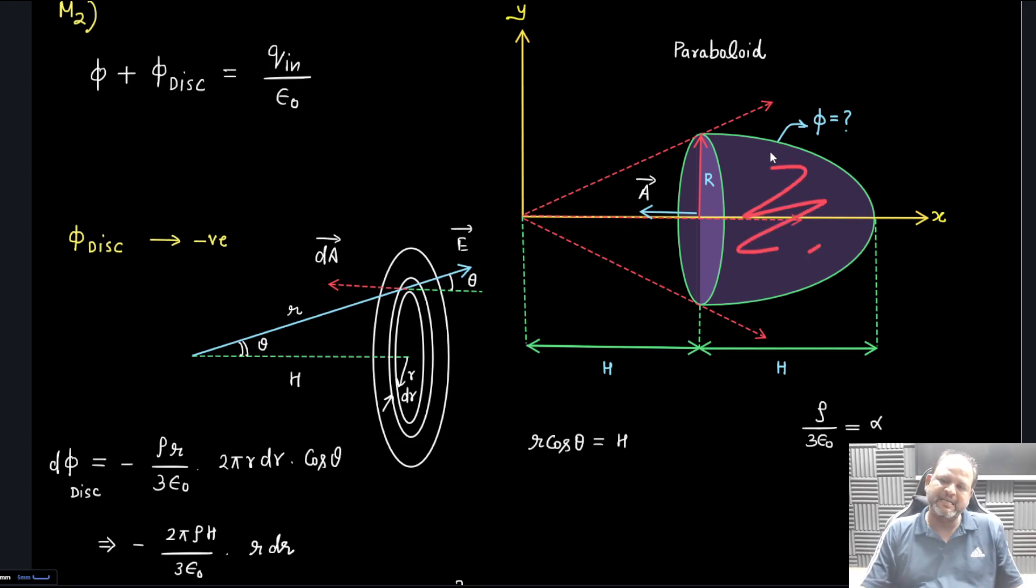Somehow if I can calculate this flux - I know volume charge density is constant, I know the volume, I know inside the paraboloid how much charge is present. But the problem is at this point everywhere field is variable, so what I have to do is at a distance r I'll take a differential ring.